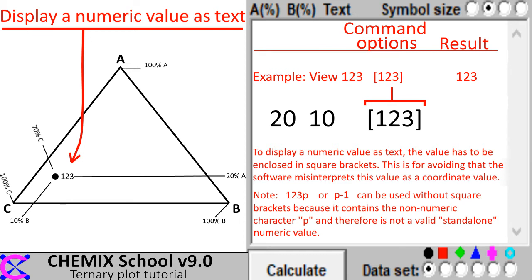To display a numeric value as text, the value has to be enclosed in square brackets. This is for avoiding that the software misinterprets this value as a coordinate value.